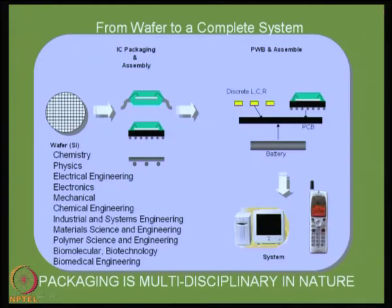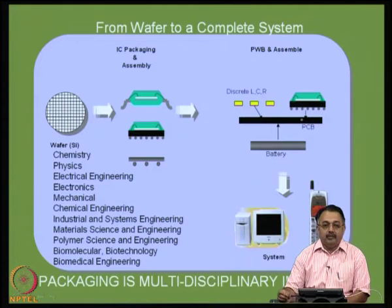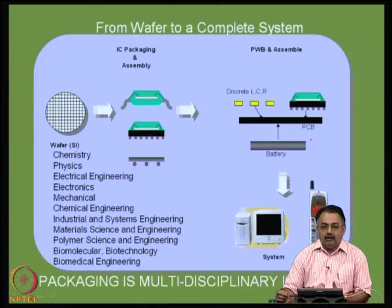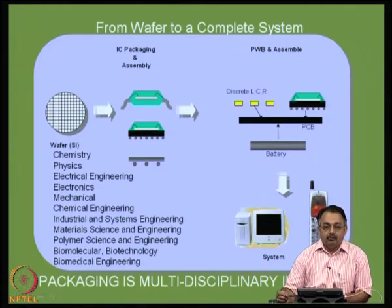Going back to the slide: there is the wafer. From there, you go to what is known as manufacturing or production of single chip packages — how ICs or integrated circuits are manufactured in various formats. From there, there is another set of activity called PWB — Printed Wiring Board and Assembly — where a single package or group of packages are mounted together and interconnected on a single substrate called a Printed Circuit Board, along with other electromechanical components powered by battery and so on. Then it goes to the formation of a system.